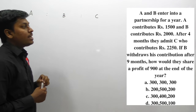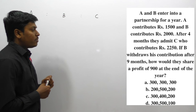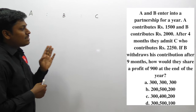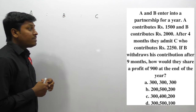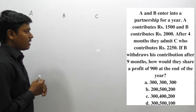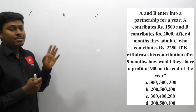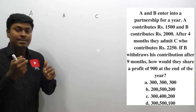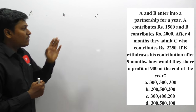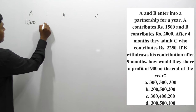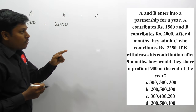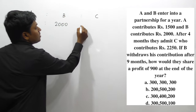Question number 2: A and B enter into a partnership for a year. A contributes rupees 1,500 and B contributes rupees 2,000. After 4 months, they admit C who contributes rupees 2,250. If B withdraws his contribution after 9 months, how would they share a profit of rupees 900 at the end of the year?